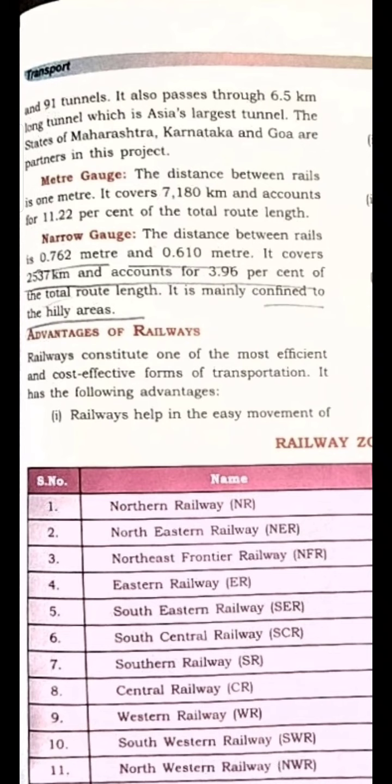The meter gauge has a distance of 1 meter between the rails. Major parts of the country — northern UP, Bihar, Assam, Rajasthan, Gujarat, Maharashtra, Karnataka, Tamil Nadu — are also connected with the meter gauge.